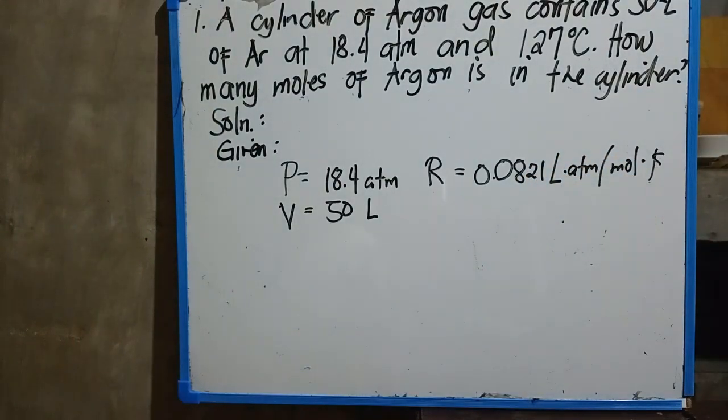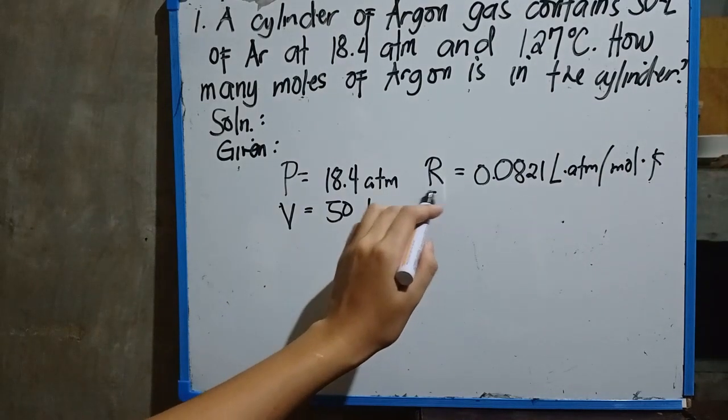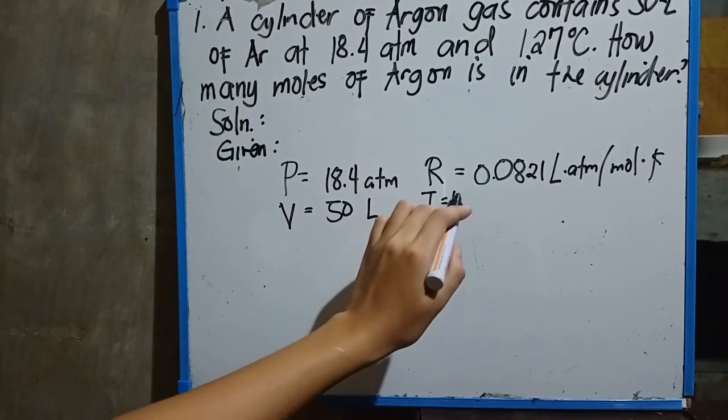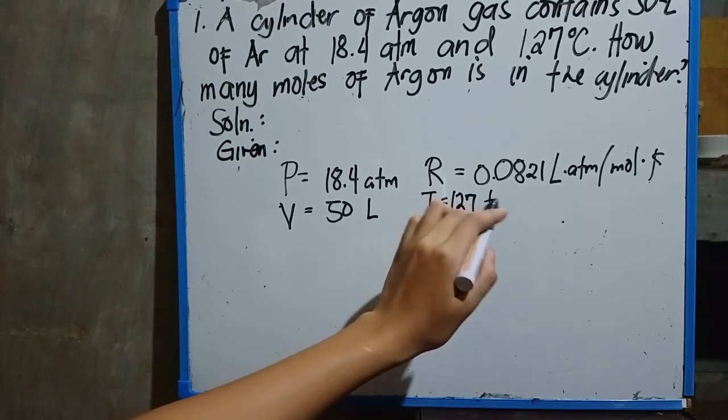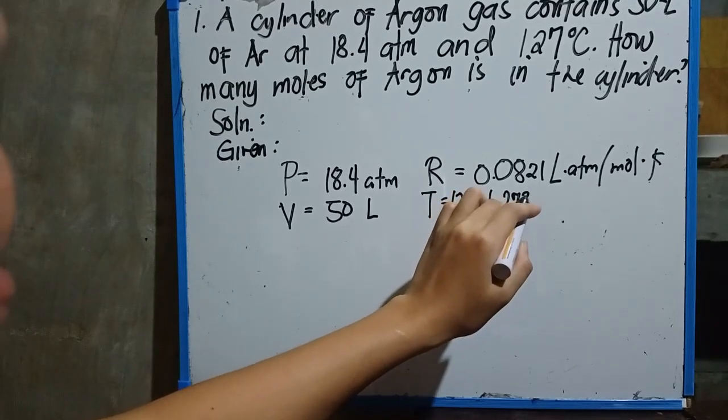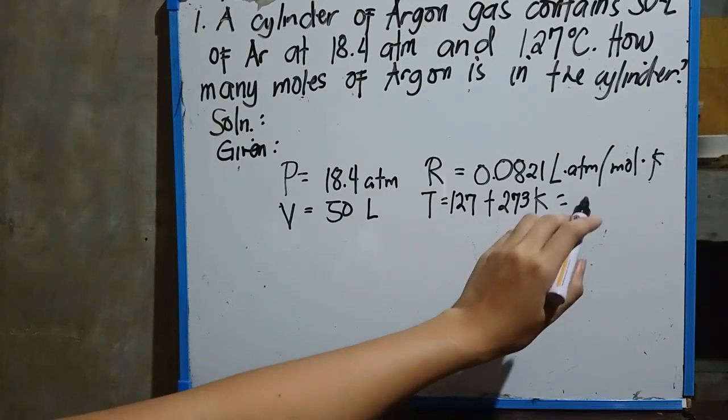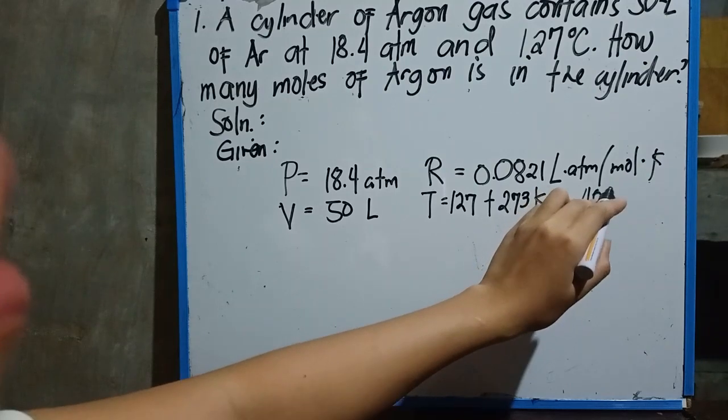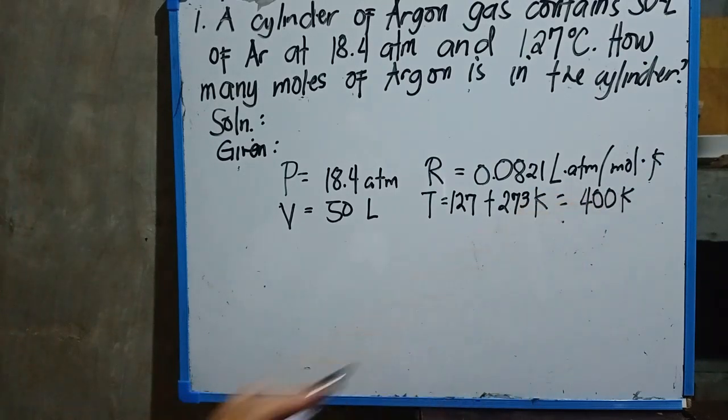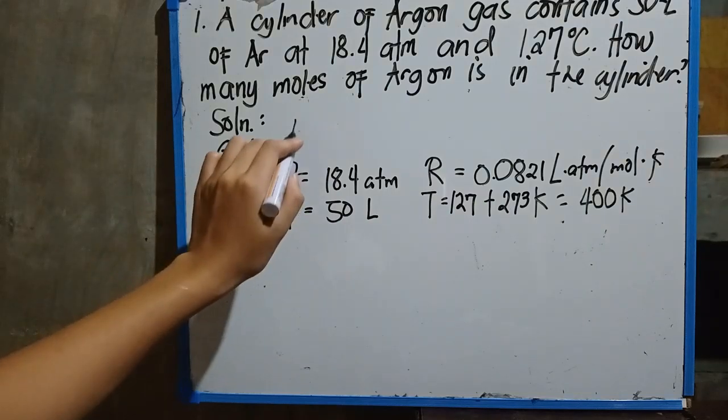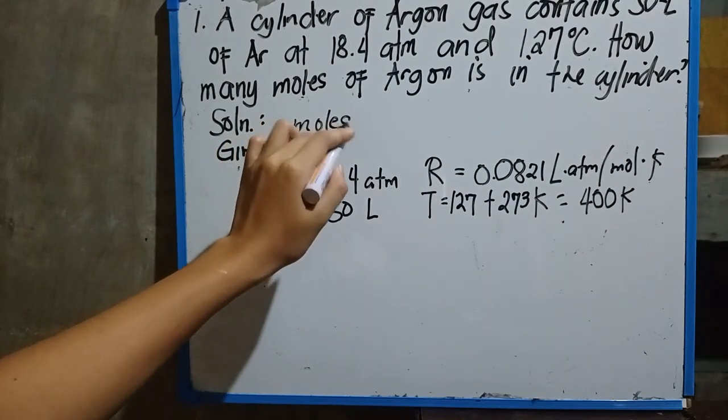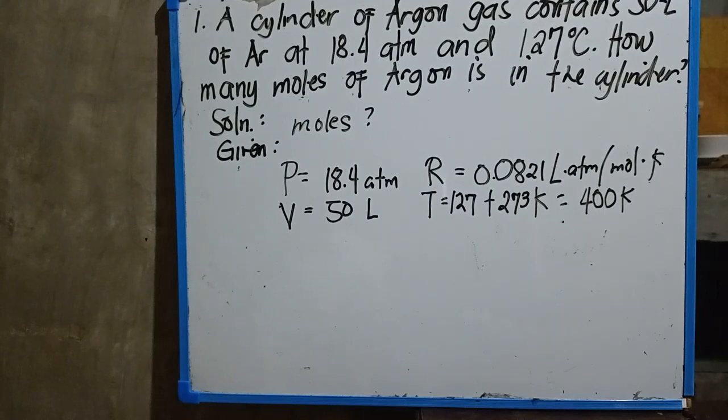And for our temperature, we need to convert degree celsius to kelvin. So 127 plus 273, it is equivalent to 400 kelvin. So it is already complete and the moles is the unknown, so we can now start.